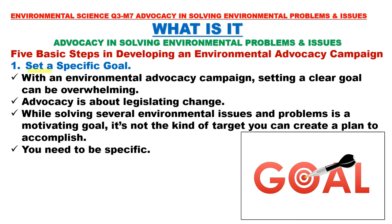Step 1: Set a specific goal. With an environmental advocacy campaign, setting a clear goal can be overwhelming. Advocacy is about legislating change. While solving several environmental issues and problems is a motivating goal, it is not the kind of target you can create a plan to accomplish. You need to be specific. Your goals need to be as specific as possible; otherwise they won't give you enough direction to follow through.